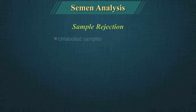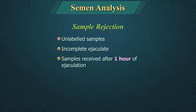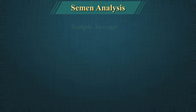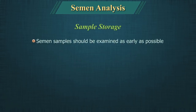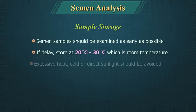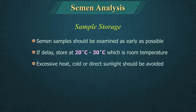Sample Rejection: Unlabeled samples, incomplete ejaculates, and samples received after 1 hour of ejaculation or inadequately transported samples should be rejected. Sample Storage: The semen sample should be examined as early as possible. If delay is likely, store at 20°C to 30°C (room temperature). Excessive heat, cold or direct sunlight should be avoided. Do not store the sample in a refrigerator.